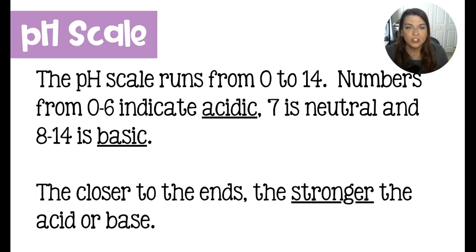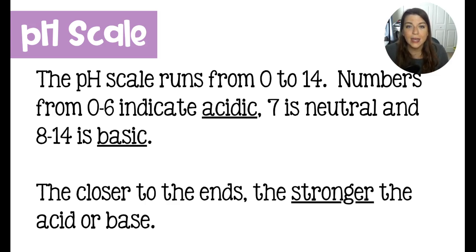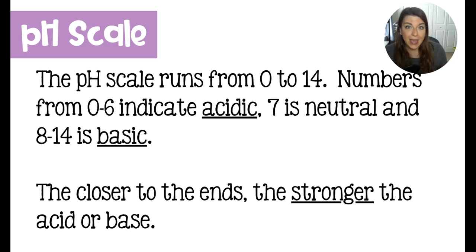The entirety of the pH scale runs from 0 to 14. Numbers from 0 to 6 indicate that you're working with an acidic solution. 7 represents something neutral, and 8 to 14 represents something basic, or sometimes we say alkaline. The closer your solution is to the ends of the pH scale, the stronger it is as an acid or base, depending on which end you're at.